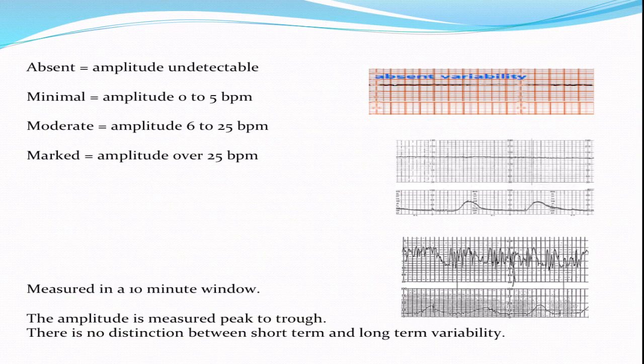Marked beat-to-beat variability can really be either normal or abnormal. In most cases it's just a sign of a highly active fetus, but there are associations with extreme variability and fetal stress or distress conditions. You assess this over a 10-minute window, and the amplitude is measured from the peak to the trough of the rate wave. Currently, no distinction is made between short-term and long-term variability, a distinction that was made in the past.